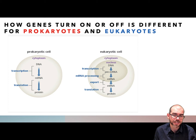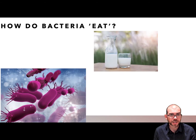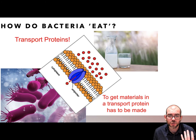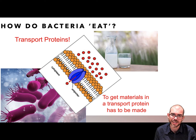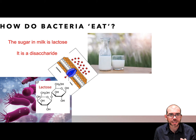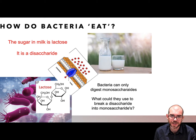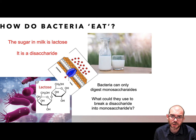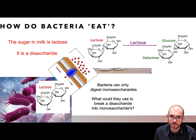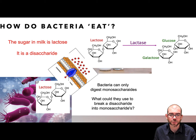I'm going to first teach you how prokaryotes — bacteria — regulate their genes, and then we'll look at the complex ways that eukaryotes regulate. So thinking of prokaryotes, how does a bacteria eat? It doesn't really have a mouth. If there's some molecule present that it wants to take in, it's going to need some kind of a transport protein to move those materials into the cell to be digested. Looking at the example of milk, milk contains the sugar lactose, which is a disaccharide. Once that disaccharide enters the bacteria, it's not going to be able to digest it. Bacteria can only digest monosaccharides. So to break this apart, the bacteria is going to need some kind of an enzyme, such as lactase, that can break that lactose down into the monosaccharides glucose and galactose.